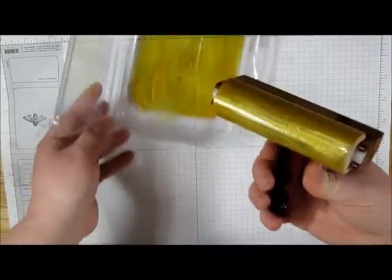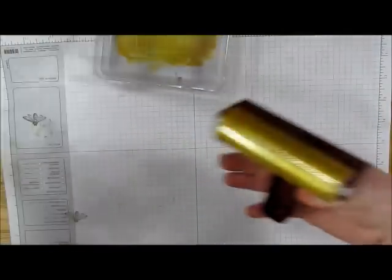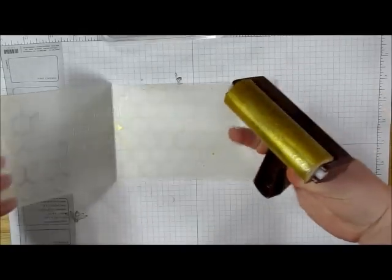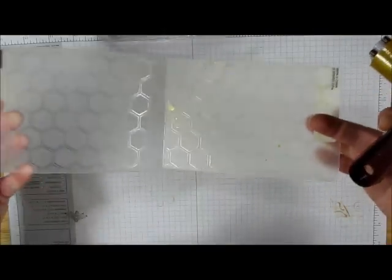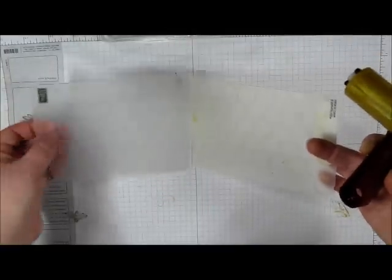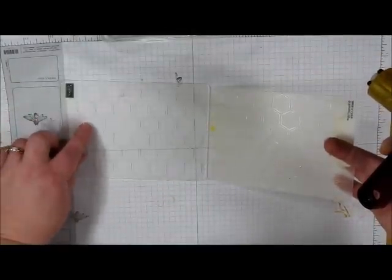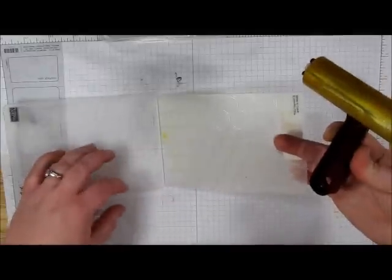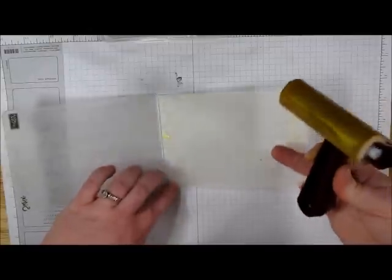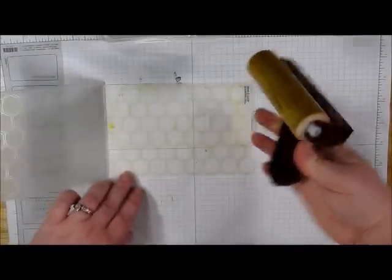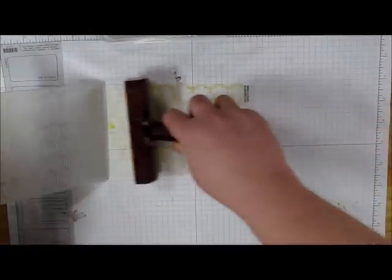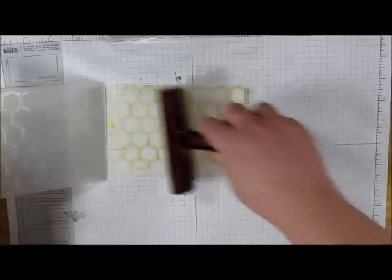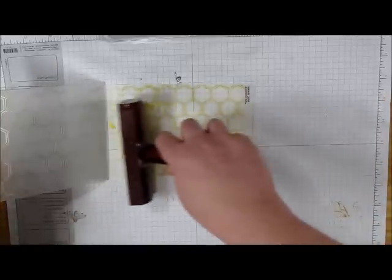Now you're going to use the brayer on your embossing folder. You can use it on either side. One side of your embossing folder will have the dents in it and the other side will have the raised portions. For the card that I showed you, I'm going to use the raised side. But it's fun to play with both sides and see what kind of effects you get.